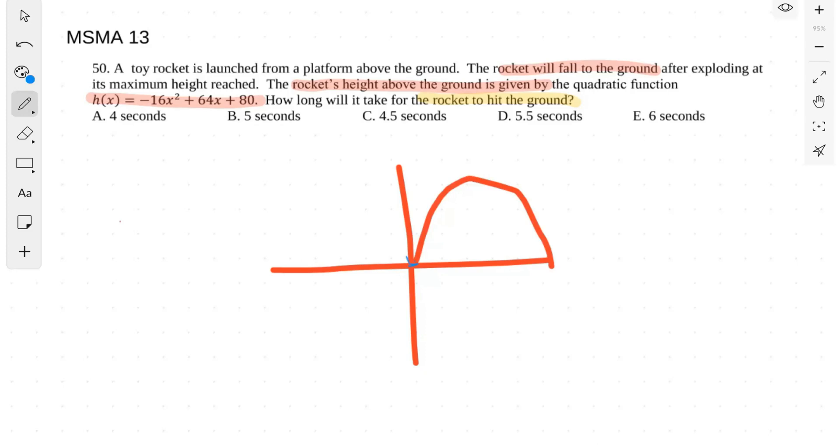So at this point right here, that is the maximum height—that's where the rocket explodes. So when it asks how long will it take for the rocket to hit the ground, it's asking for the positive zero of the quadratic equation.